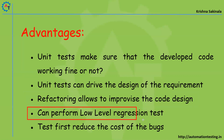You can perform low-level regression testing — you keep testing your code until it passes, meaning you are doing regression testing again and again to meet the requirement. Low-level means while writing your code you are already testing. Normally regression is done by testers after completion, but here the developer itself is doing the regression — that is what we call low-level regression testing.